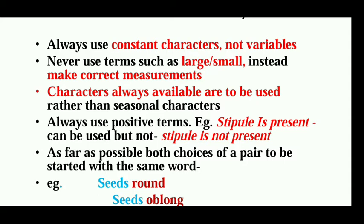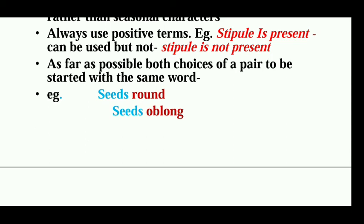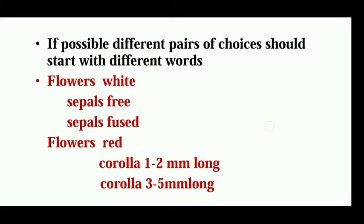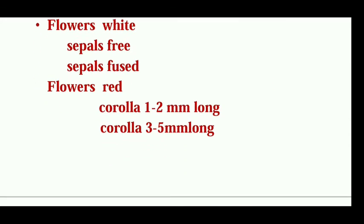As far as possible, both choices of a pair should start with the same word. In the couplet, both leads should start with the same word — for example, 'seeds round' and 'seeds oblong.' The two beginning words must be the same in the couplet. And if possible, different pairs of choices should start with different words. For example, within 'flowers white,' the sub-choices might be 'sepals free' or 'sepals fused,' while within 'flowers red,' the sub-choices might be 'corolla 1 to 2 millimeters long' or 'corolla 3 to 5 millimeters long.' Out of one choice, you may give two sub-choices.